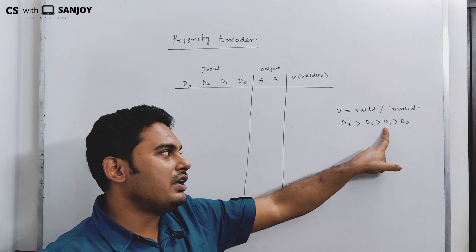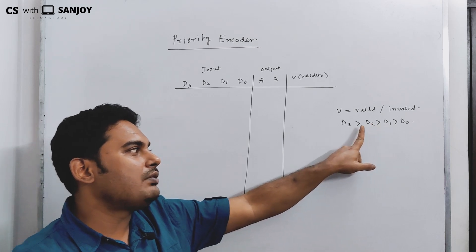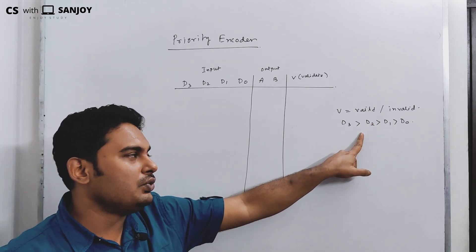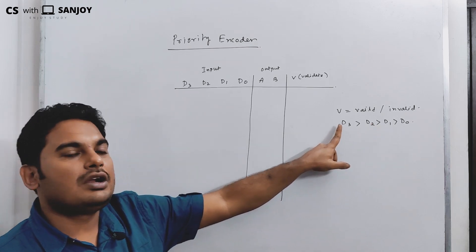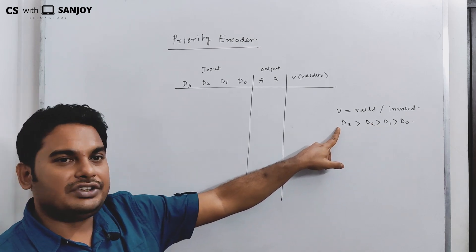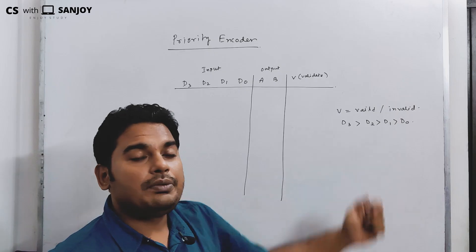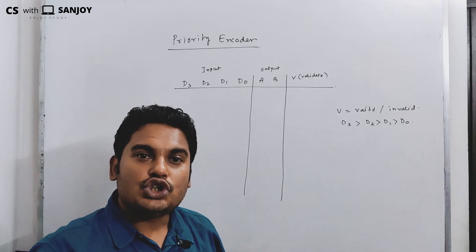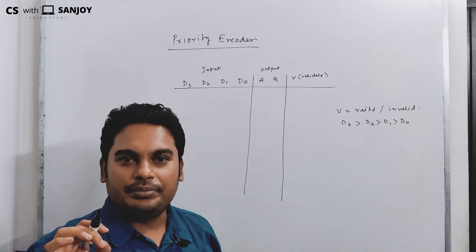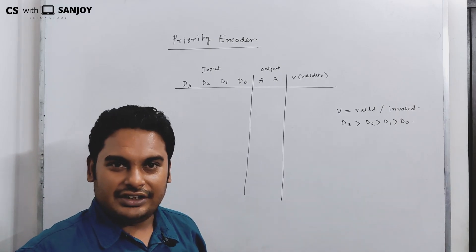Now, the priority of D1 is greater than D0. The priority of D2 is greater than D1. The priority of D3 is greater than D2. So D3 has the highest priority among all inputs.